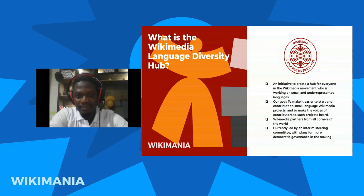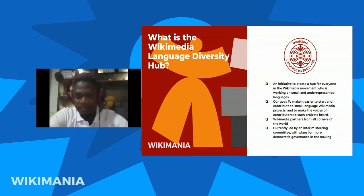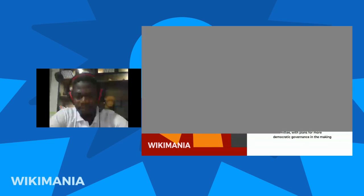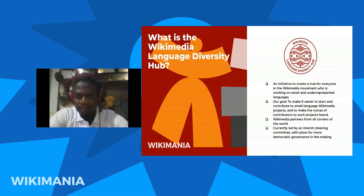The hub builds on the amazing work that's been done already in the Wikimedia Language Diversity Group on Meta, which was started in 2012. A lot of the idea for a more formal structure like a hub came as a result of the Celtic Knot conferences, which were organized by Wikimedia UK. During those conferences, we had a lot of talks with people who were working on smaller languages and realized that a lot of people were doing very similar work across many different languages, but not necessarily knowing what other people were doing. So we thought it was a good idea to try to get better coordination for all this kind of work.